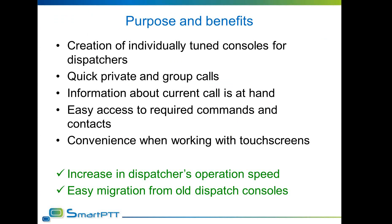Whenever more functionality is required, the context menu can be called for any commands not available through direct access. The amount of mouse movements and clicks is decreased, thus increasing the effectiveness of a dispatcher. Quicker access to needed functions allows for easier and more fluent communication with radio groups, subscribers, phone contacts, and other dispatchers. Custom consoles also allow creation of interfaces as similar as possible to what dispatchers previously worked with, easing the migration from old analog dispatcher consoles to SmartPTT.